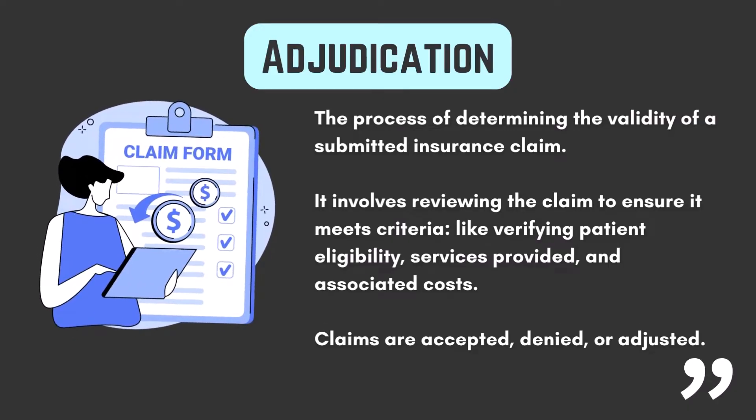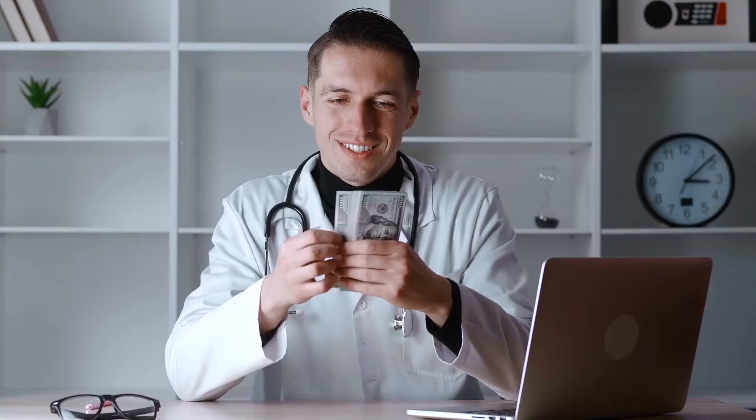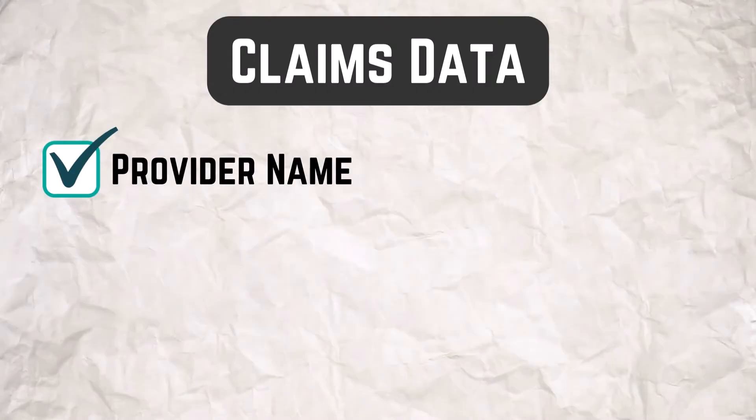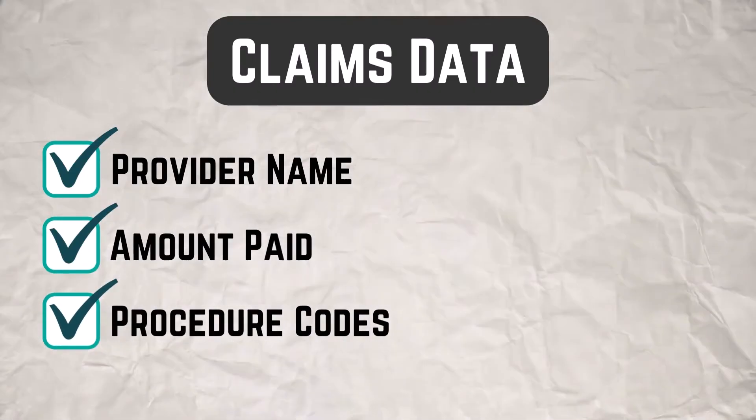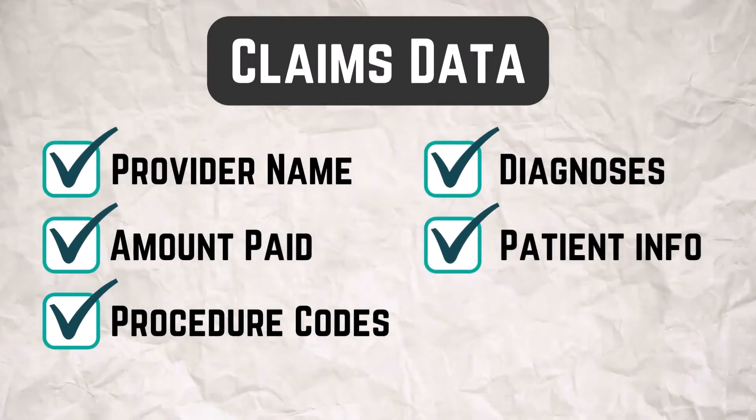For example, a provider might commit fraud by trying to submit a claim using a diagnosis code that they know will earn them more money than a more accurate code. Insurance companies don't want to pay more than they have to, so they adjudicate claims to ensure the money they're about to pay is fair and accurate. The claims data might be pre-adjudicated or post-adjudicated, and it might contain information like the name of the provider, the amount paid out, procedure codes rendered, diagnosis codes, and information about the patient. However, claims data doesn't capture as much detail as EHRs — we might see that a test was given on a certain date, but we won't be able to see the test results like we might in the EHR.